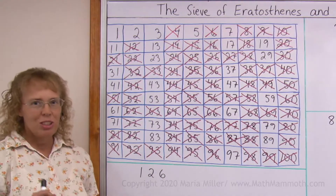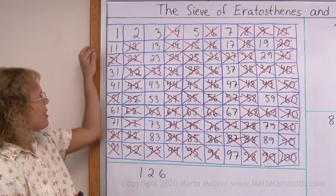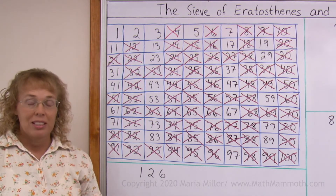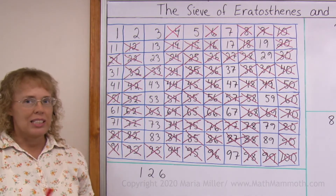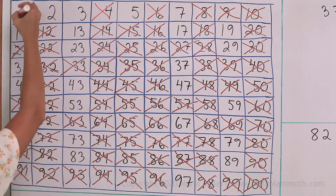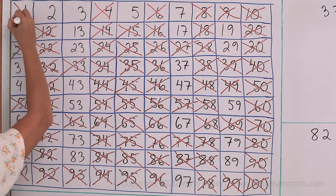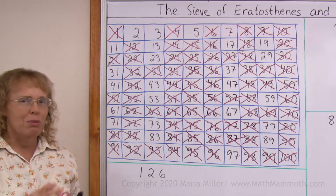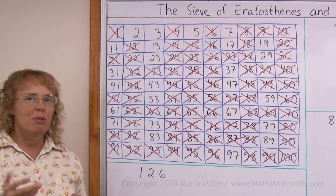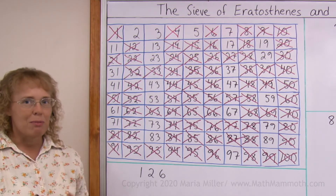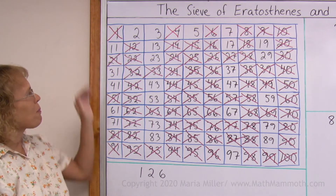Now let's look at number 1 just real quick. In modern mathematics, number 1 is not considered prime, so I'll cross it out too. In times past it has sometimes been considered prime, and some people are still kind of debating about it. But in today's mathematics, it is not listed as prime.